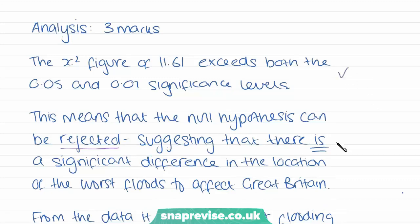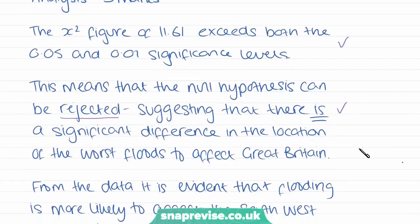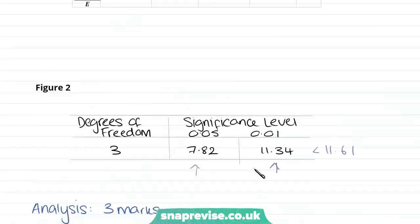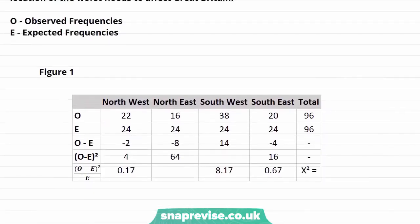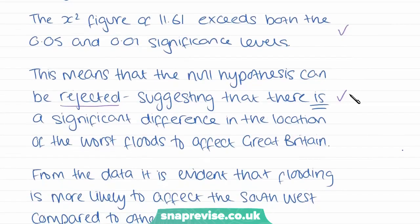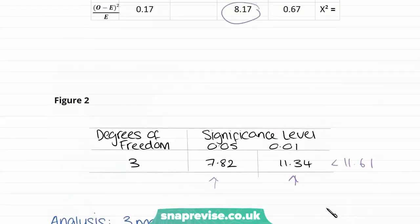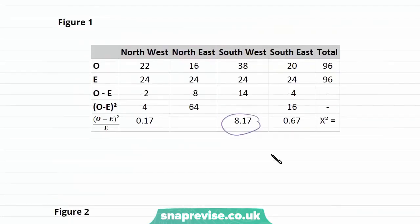For the third mark of our analysis, we can say that from the data it is evident that flooding is more likely to affect the southwest compared to other locations. We can see this by looking at our table where the figure is 8.17, showing the southwest is more significantly affected. It's all about using the data to provide the analysis. So those are three marks for this question — if we get the three marks right from filling in the table, then the three-mark analysis is straightforward to achieve all six marks.